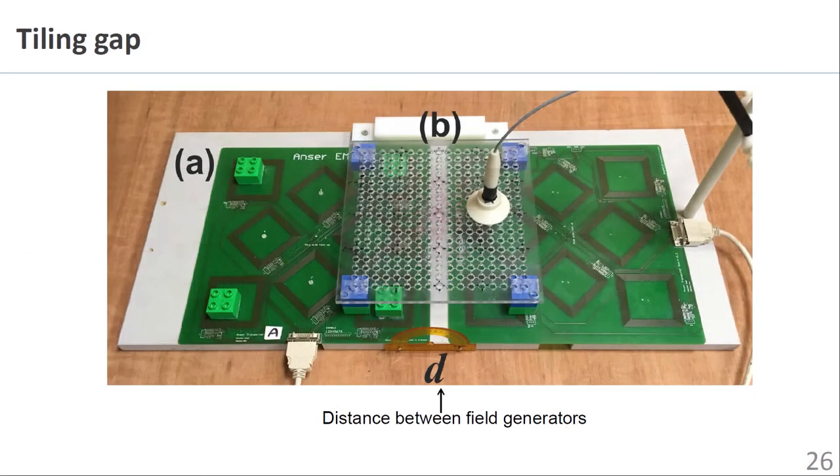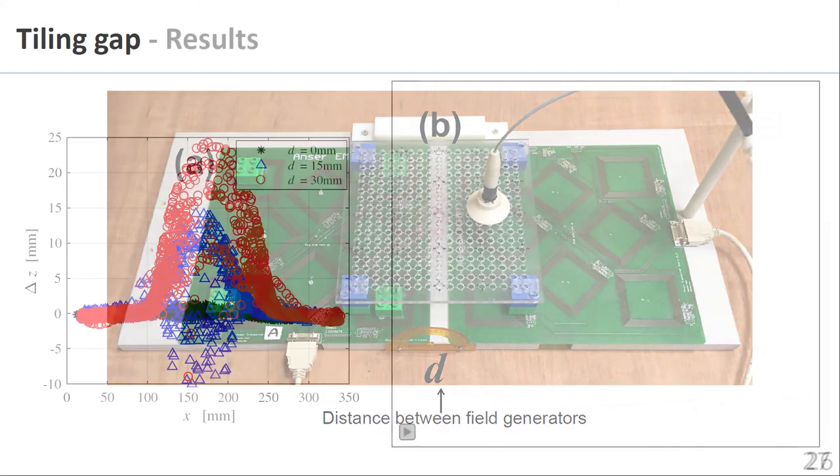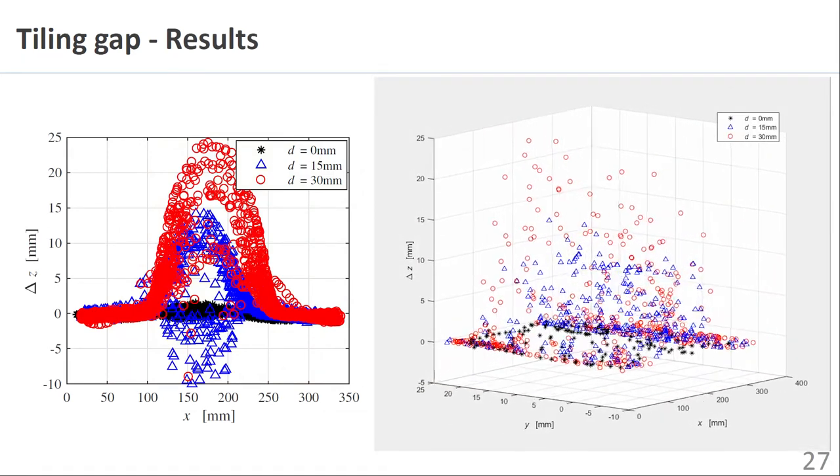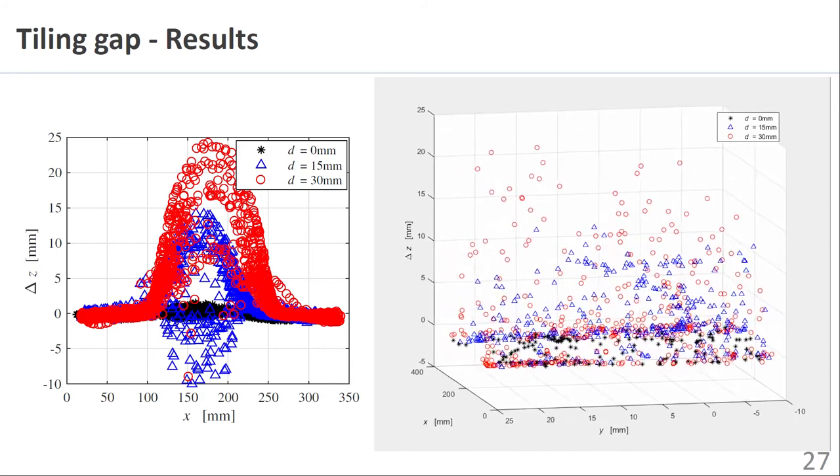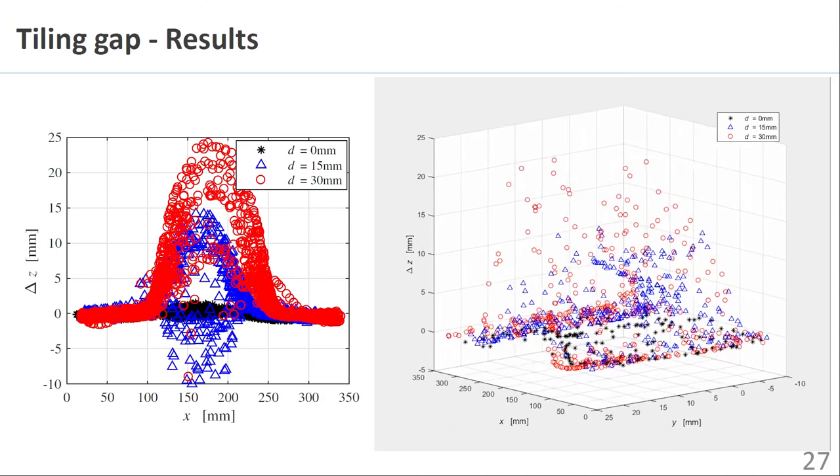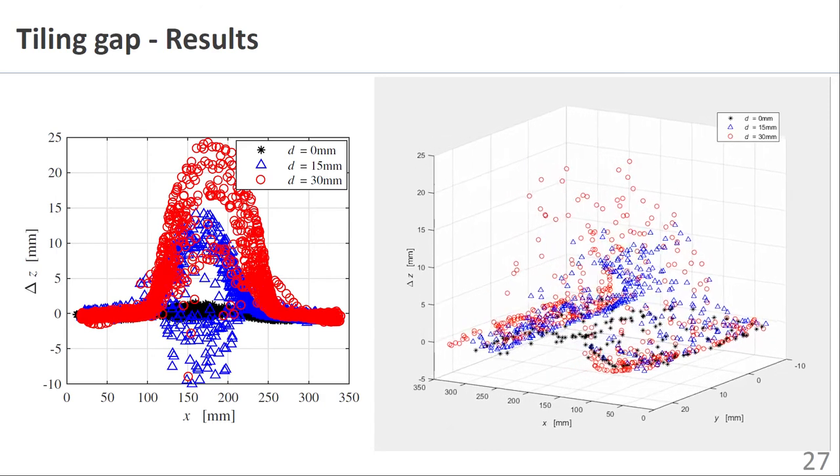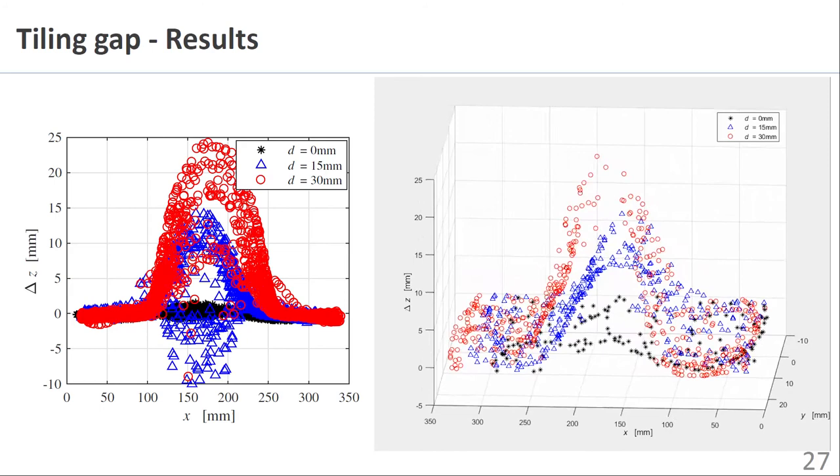An experiment was also performed to establish whether sparse placement of adjacent field generators is feasible. A known separation, D, was introduced between two adjacent field generators A and B. A cloud of points was acquired at a fixed height above the field generators above the separation. This resulted in the magnetic sensor reporting errors which were maximized in the region of the separation as shown. Observing the z-axis only, errors in excess of 10 mm are observed for separations as small as 15 mm between the field generators.